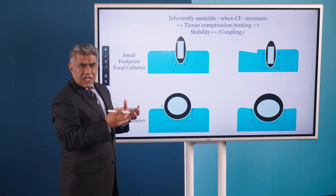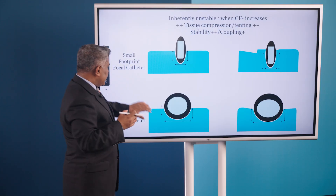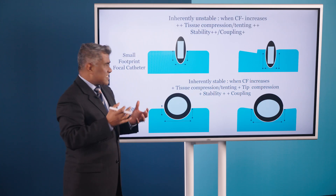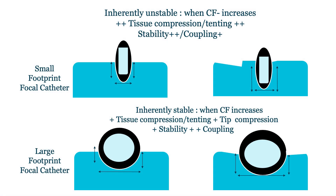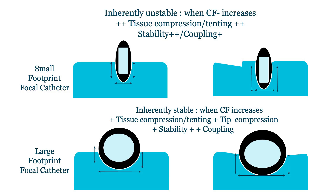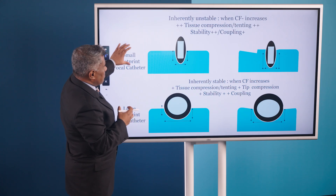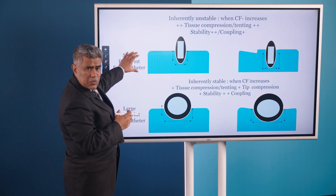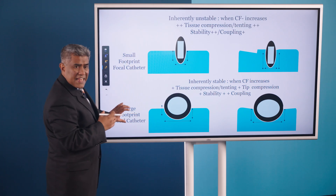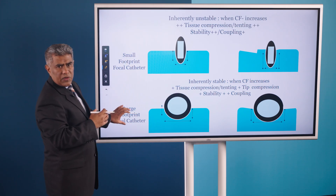When we talk about large footprint catheters, these catheters are inherently stable. When contact force increases, there's tissue compression and tenting to a certain degree, but what also happens is the tip itself compresses, and that helps with stability and coupling. So contact force may be particularly relevant to maximize the lesion with small footprint catheters, but may be less important with large footprint focal catheters.